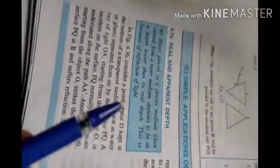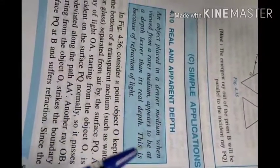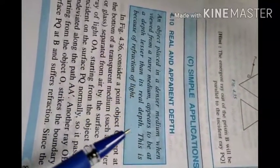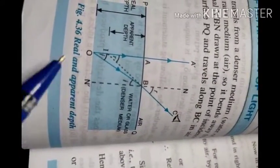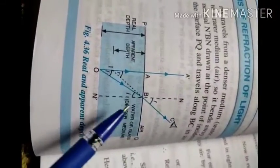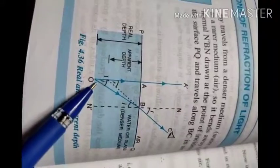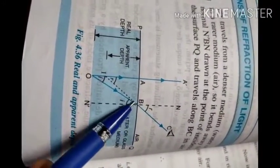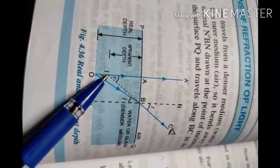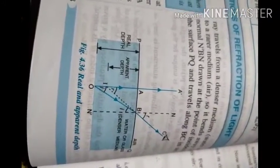So you've got the idea of what real depth and apparent depth are. As written in the box: an object placed in a denser medium, when viewed from a rarer medium, appears to be at a depth lesser than its real depth. This is because of refraction of light. If the light had not been refracted or had not changed its path, it would have been a straight line. Since it's bent, producing it backward makes it appear to come from the apparent position.